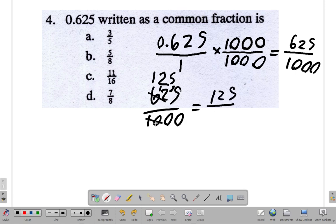5 into a thousand. Well, 5 into 10 is 2. And you have 2 zeros. So it's 200. But you can still simplify it further.